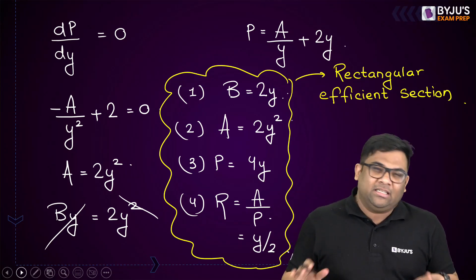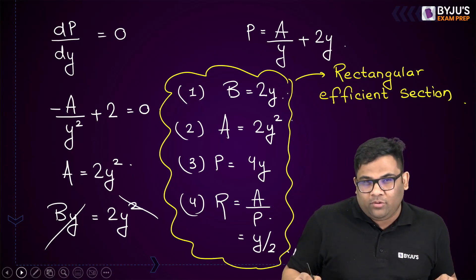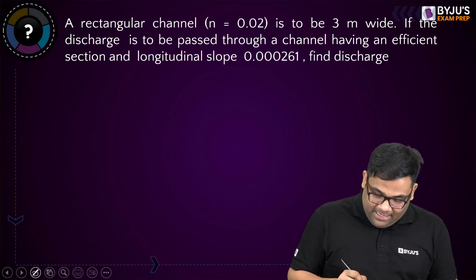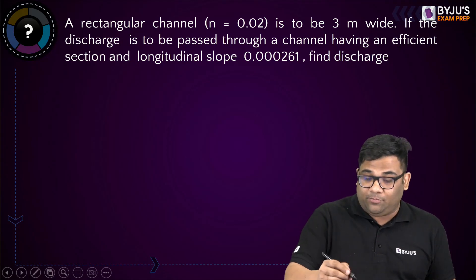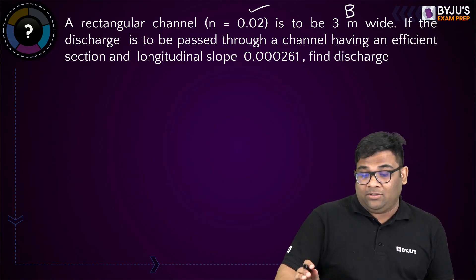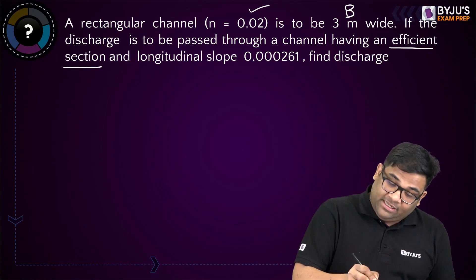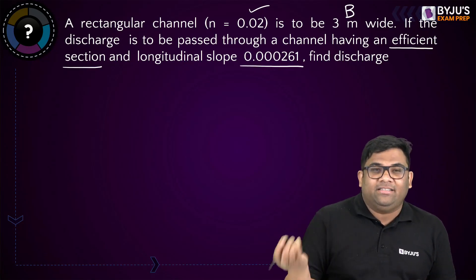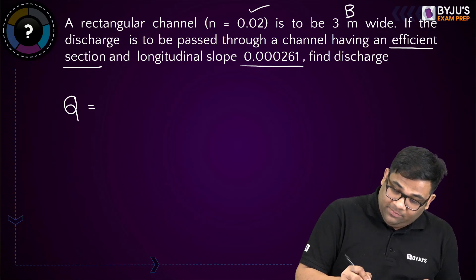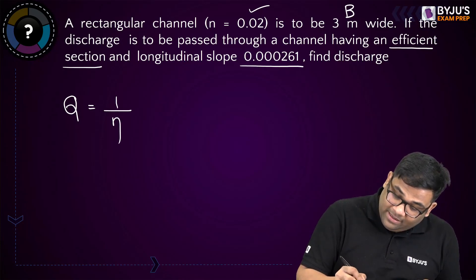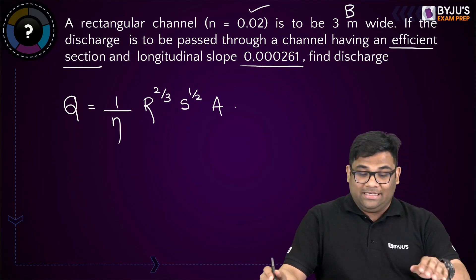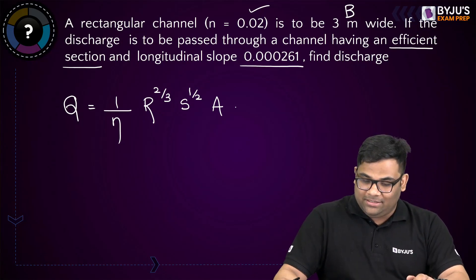We can use all these conditions to solve problems. The first question: a rectangular channel having Manning's constant n = 0.02 is 3 meters wide. The channel has an efficient section and slope S = 0.000261. Find the discharge. Using Manning's equation: Q = (1/n) × R^(2/3) × S^(1/2) × A.